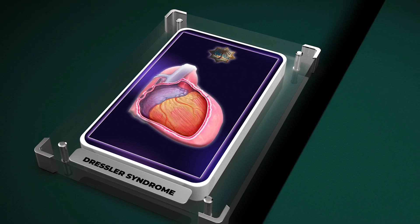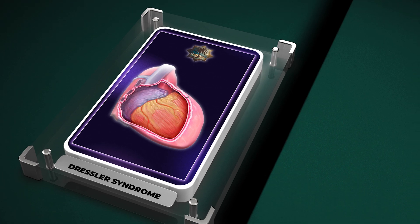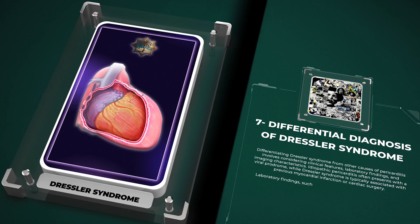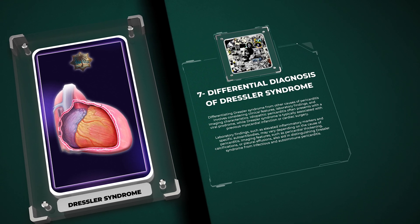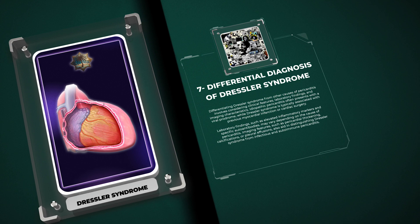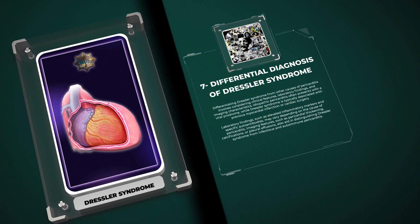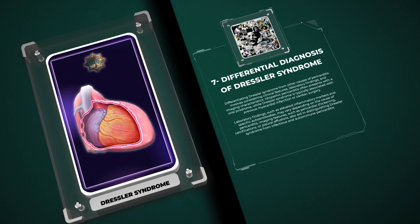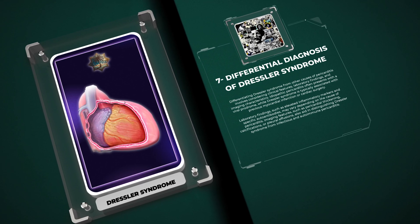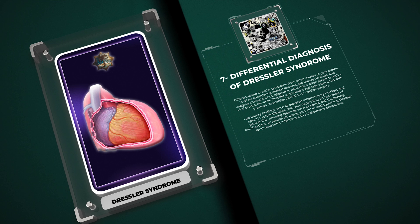Differentiating Dressler syndrome from other causes of pericarditis involves considering clinical features, laboratory findings, and imaging characteristics. Idiopathic pericarditis often presents with a viral prodrome, while Dressler syndrome is typically associated with previous myocardial infarction or cardiac surgery. Laboratory findings, such as elevated inflammatory markers and specific autoantibodies, may vary depending on the cause of pericarditis. Imaging features, such as pericardial thickening, calcifications, or pleural effusions, also aid in distinguishing Dressler syndrome from infectious and autoimmune pericarditis.